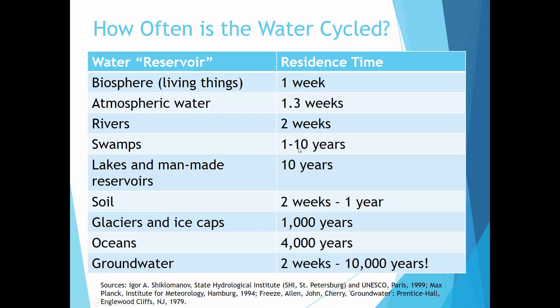Swamps — we're now moving into years. Swamps hold water anywhere from one to ten years; it gets kind of murky. These are very important ecosystems and the water does hang around for longer. A swamp is very similar to a lake. In a lake, a lot of that water stays for years — about ten years is the average residence time for water in a lake.